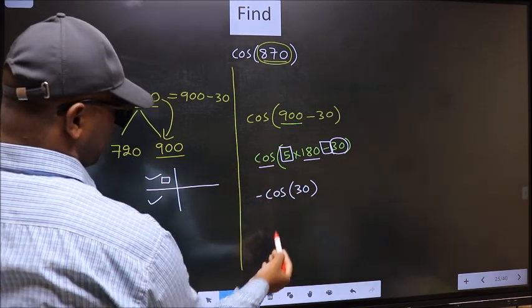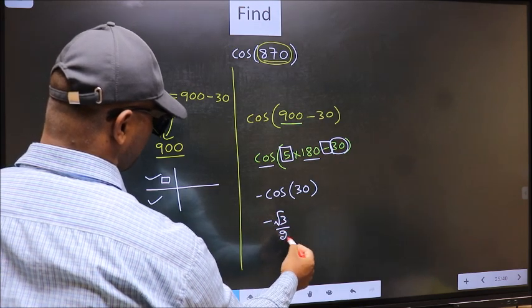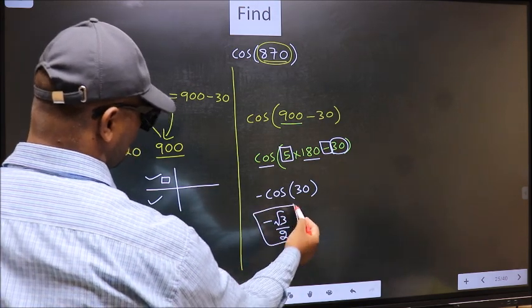So we should put negative. Negative cos 30 is root 3 by 2. This is our answer.